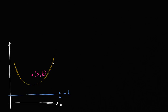What I have attempted to draw here in yellow is a parabola, and as we've already seen in previous videos, a parabola can be defined as the set of all points that are equidistant to a point and a line. The point is called the focus of the parabola, and the line is called the directrix of the parabola.